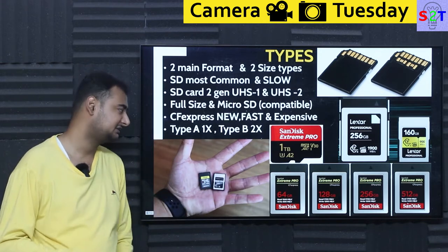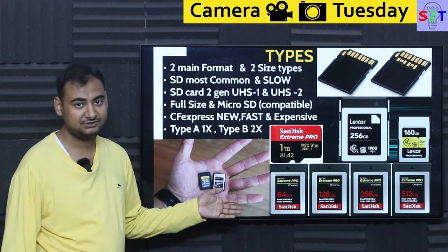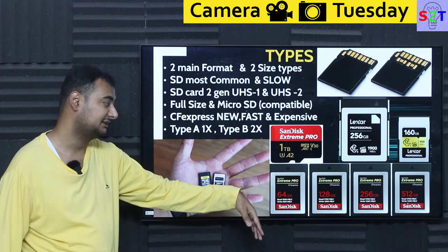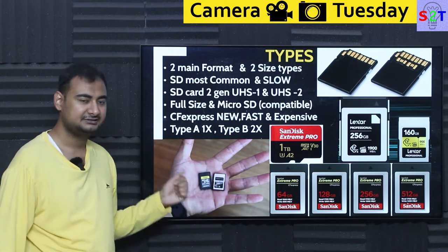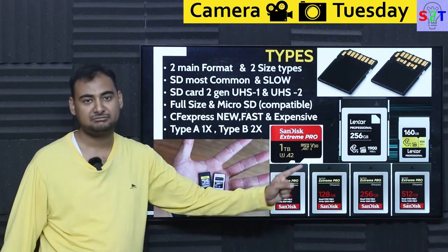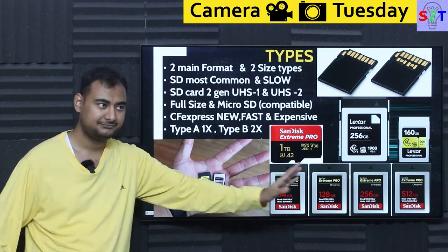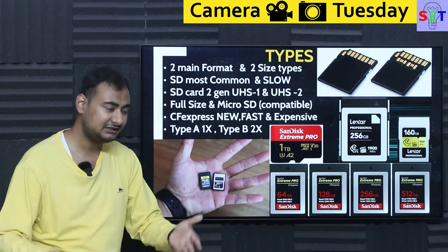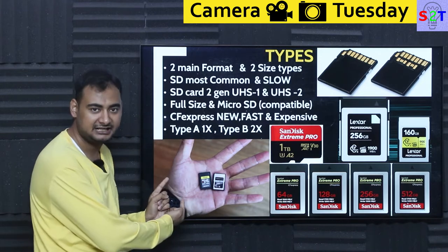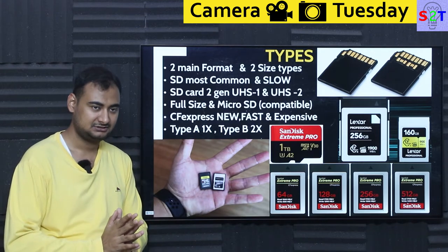Type B has two PCI lanes and Type A has one. The bigger Type C brother hasn't been used by anyone yet. The Type B card is rated at around 1700 MBps on the package. Type A is used by Sony, and the speaker is frustrated about this because every other manufacturer — Panasonic, Nikon, and others — adopted Type B for their cinema lineups, while Sony went and created their own Type A format.